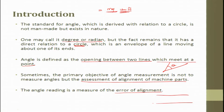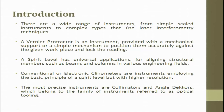For example, spindle run-out or work piece run-out — all these things can be easily found out. There is a wide range of instruments, from simple scaled instruments to complex types that use laser interferometer techniques for measuring the angle. A vernier protractor is an instrument provided with a mechanical support or mechanism to position it accurately against a given work piece and lock the reading.